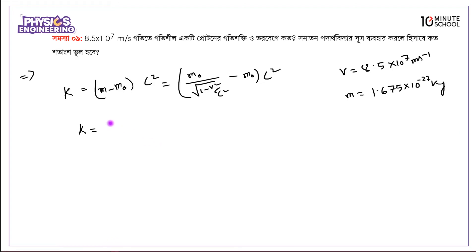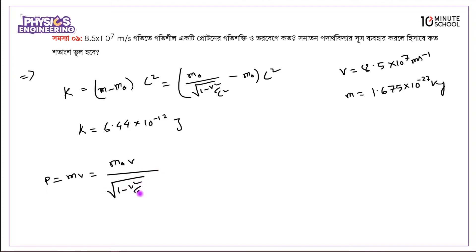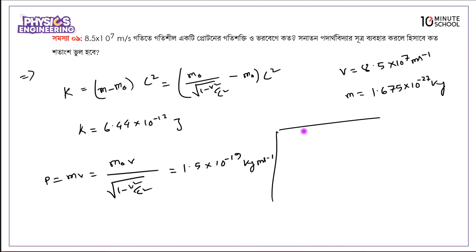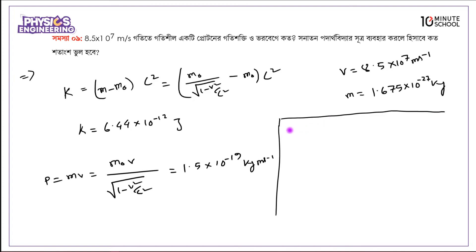The relativistic kinetic energy is 6.44 into 10 to the power minus 12 joules. The relativistic momentum p equals m0 v over root over (1 minus v squared over c squared), giving p equals 1.5 into 10 to the power minus 19 kilogram meters per second. We also compare these with classical values.